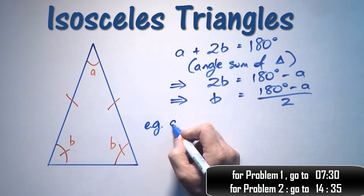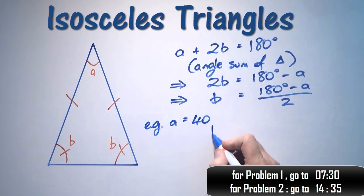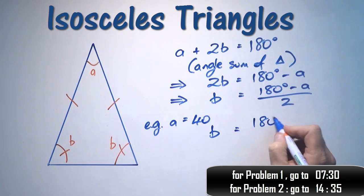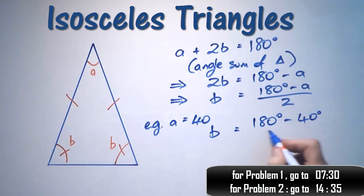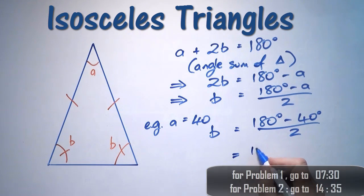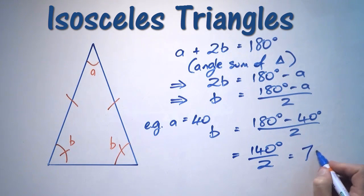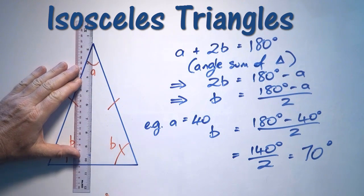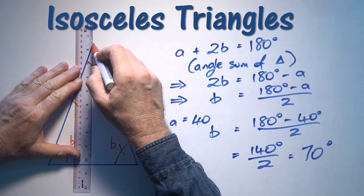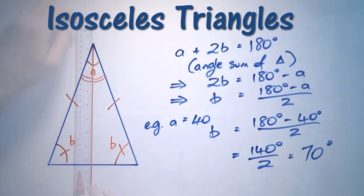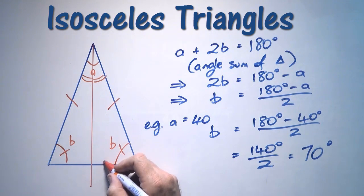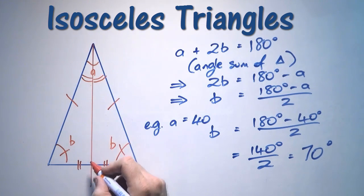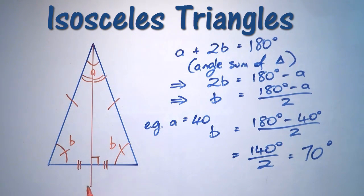For example, if A equaled 40 degrees, then B would equal (180 minus 40) over 2, which equals 140 over 2, equals 70 degrees. So these two angles would each be 70 degrees. Further, if I were to bisect the angle at A, I would also bisect the length of the base, and this line would meet it at a right angle — and this line is a line of symmetry.